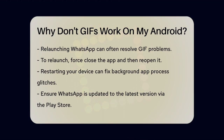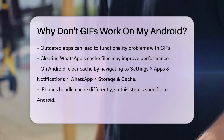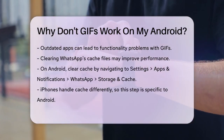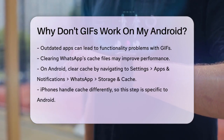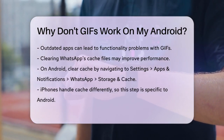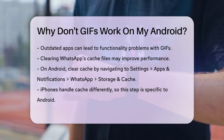Outdated apps can also cause problems. Make sure you have the latest version of WhatsApp installed. Go to the Play Store or App Store, search for WhatsApp, and click the Update icon if it's available. This update can remove bugs and glitches that might be affecting GIF functionality.